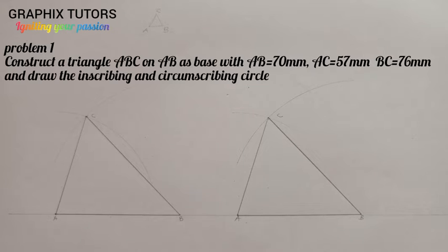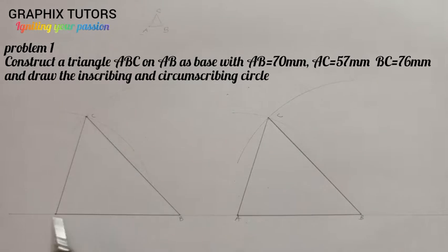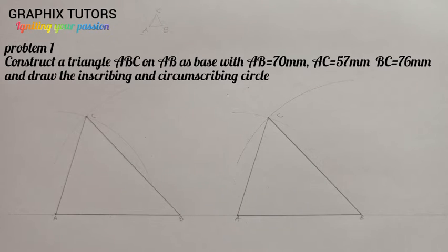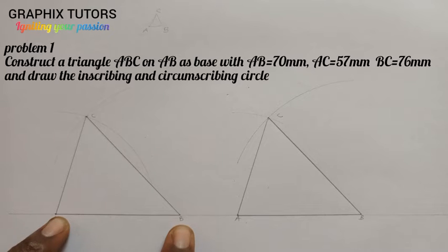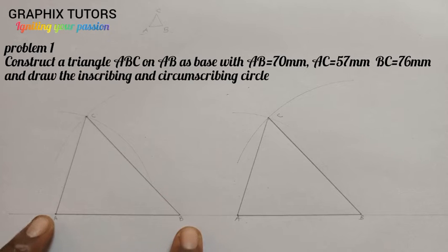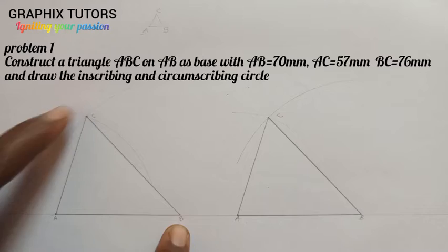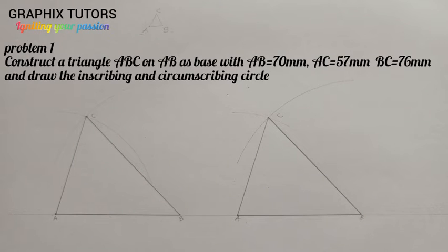What is the difference between inscribing and circumscribing? Circumscribing means you are using the circle to go around the triangle, such that the circumference will be touching each apex point — point A, point B, and point C. The criteria for circumscribing is that you need to bisect any two of the three sides: AB and BC, AB and AC, or BC and AC.